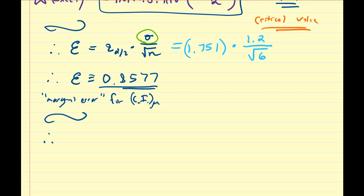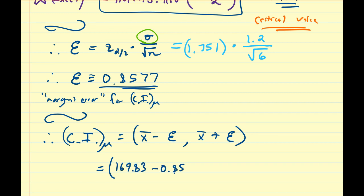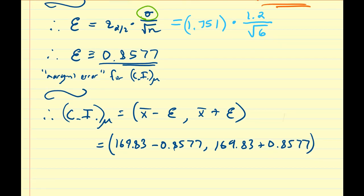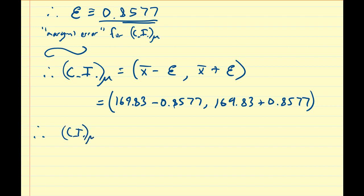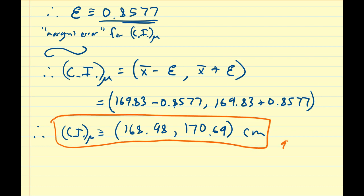So once we have the marginal error, we're pretty much done. The confidence interval for the population mean mu is going to be equal to x bar minus epsilon comma x bar plus epsilon. So this is going to be the boundaries for the confidence interval. That's going to be equal to 169.83 minus 0.8577 comma 169.83 plus 0.8577. Once we simplify those calculations out, we have that the confidence interval for mu is approximately equal to 168.98 comma 170.69. And this is measured in centimeters. So this is the 92 percent confidence interval for an estimator of the population mean.